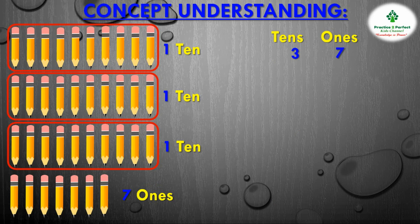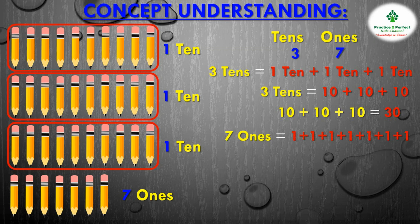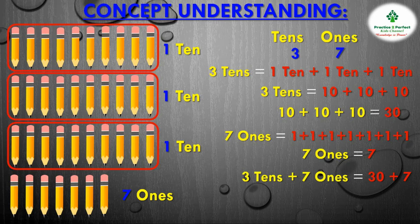Now I will show you how to expand it. 3 tens is 3 groups of 10s, that is 1 ten plus 1 ten plus 1 ten. What is 1 ten? 1 ten is just the number 10. So 3 tens is 10 plus 10 plus 10, which is equal to 30. Now 7 ones is 1 plus 1 plus 1 plus 1 plus 1 plus 1 plus 1 — there are 7 ones, so 7 ones is just the single number 7. So 3 tens and 7 ones is 30 plus 7, which is 37.